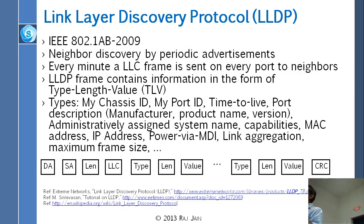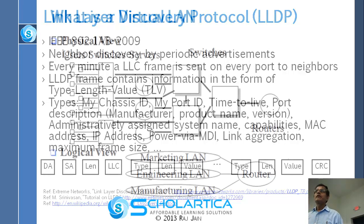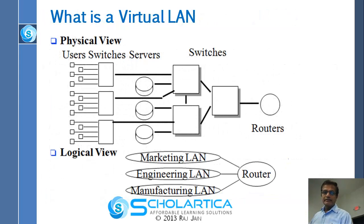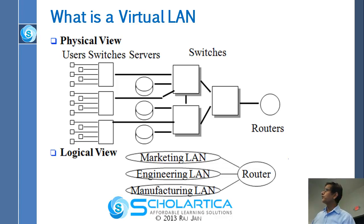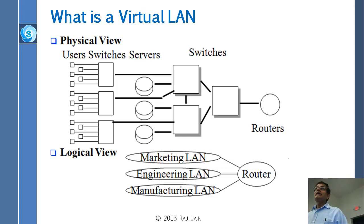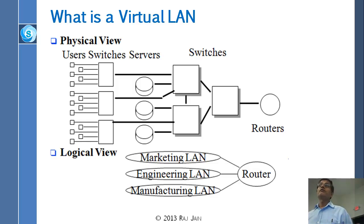To connect two VLANs, you need a router. There is a router with a single port — if you want to go from one VLAN to another, you go to the router and come back on the same port, but you are now on a different VLAN. There are routers that allow you to cross from one LAN or one VLAN to another.